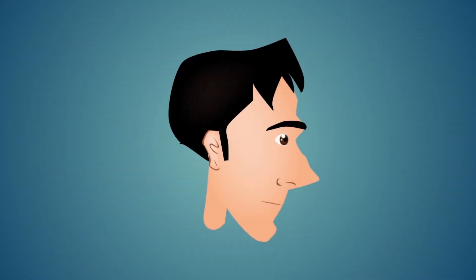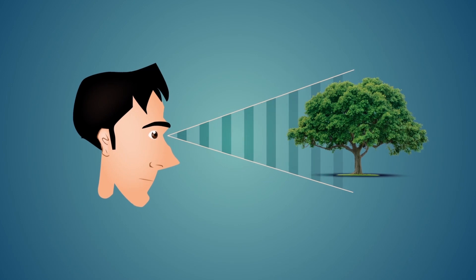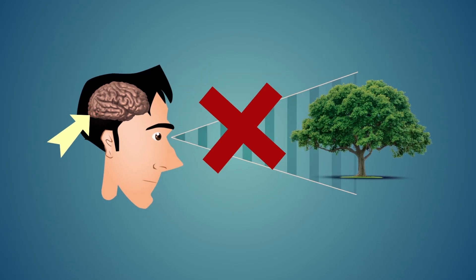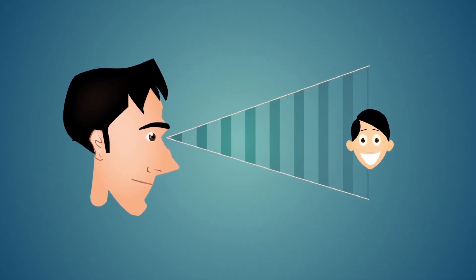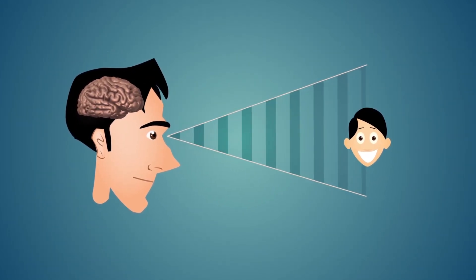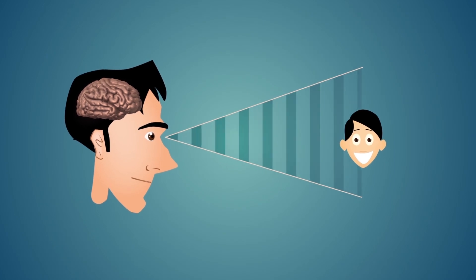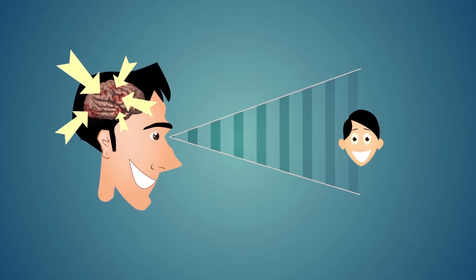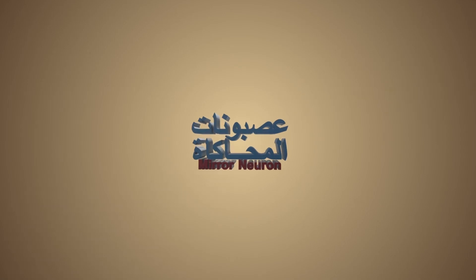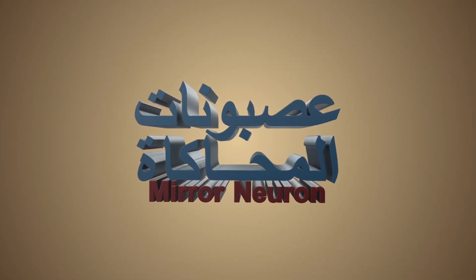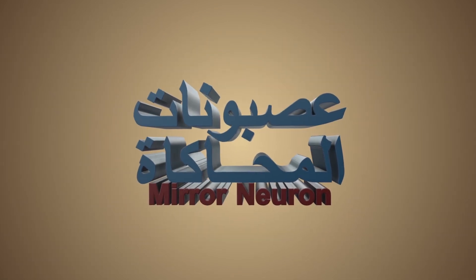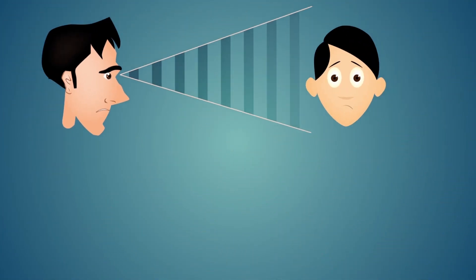كان العلم سابقاً يعتقد أننا عند النظر للأشياء ينشط فقط مركز الإبصار في الدماغ، لكن العلم الحديث يُثبت أننا عندما نرى عملاً يُمارَس أمامنا فإن الخلايا العصبية المسؤولة عن القيام بهذا العمل تنشط كذلك في الدماغ كأننا نحن الذين نقوم به. وقد أُطلق على هذا النوع من الخلايا اسم 'عصبونات المحاكاة' لأنها تحاكي العمل الذي نراه.